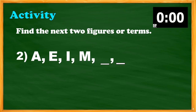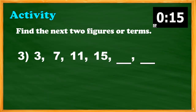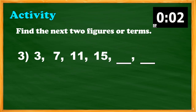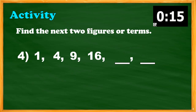The answer for number two must be Q and U. Next, number three: what do you think is the next term of the sequence — 3, 7, 11, 15, blank, blank? The answer must be 19 and 23, by adding 4 to the preceding number.